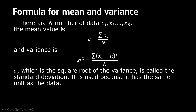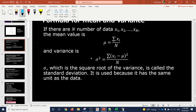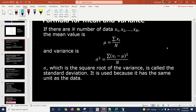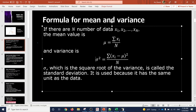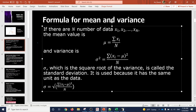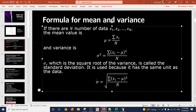Now sigma in this formula — lowercase sigma — is the square root of the variance and is called the standard deviation. So the formula for sigma would be: you take the square root of both sides, and you end up with sigma equal to the square root of the right-hand side. That would be the formula for the standard deviation.